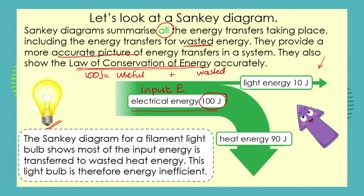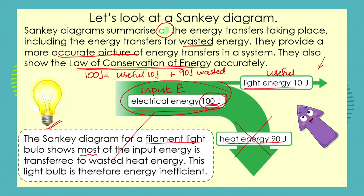When you measure the energy, you find that the light energy produced — our useful energy — is only 10 joules. The wasted energy, the heat energy, is in fact 90 joules. This shows us that 90% of the whole energy input is wasted energy. The Sankey diagram for an old-fashioned filament light bulb shows that most of the input energy is wasted. We can therefore conclude that our light bulb is actually energy inefficient — it's not using the input energy efficiently to give us maximum useful output.